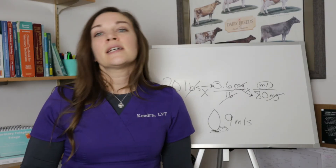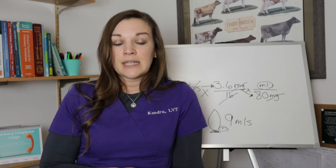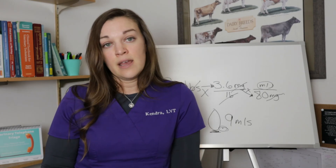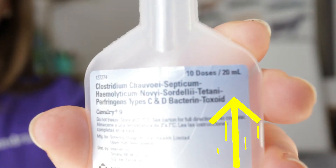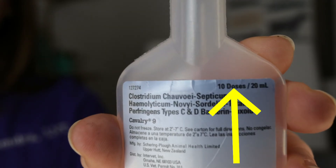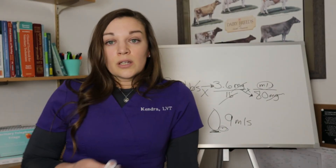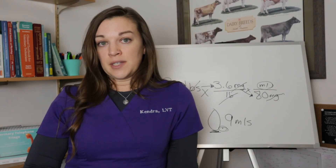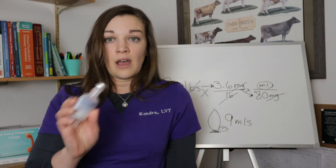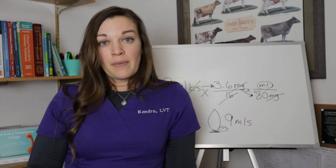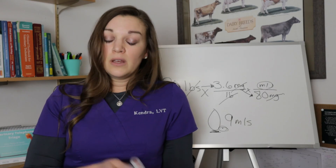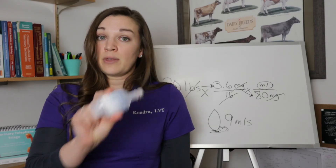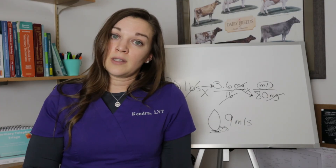The second vaccine is a CDT vaccine called Cavalry 9, commonly used in mixed animal practices. This vial says 10 doses, 20 mLs — a 20 mL total volume but only 10 doses. Simple math: 20 mLs divided by 10 doses equals 2. So each animal vaccinated from this vial needs to receive 2 mLs of the vaccine.